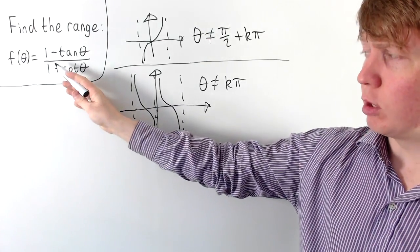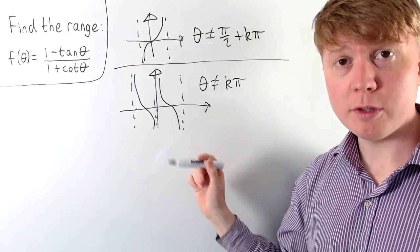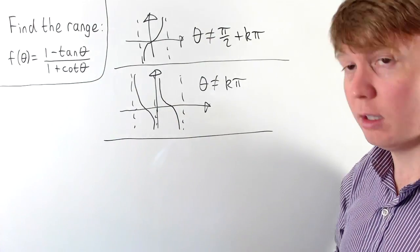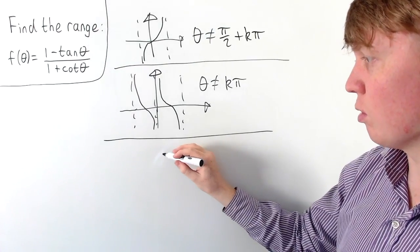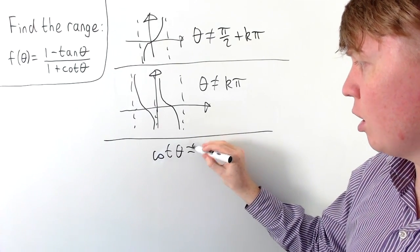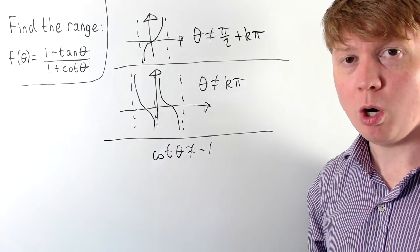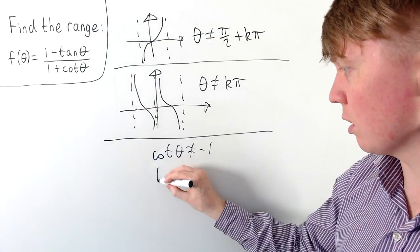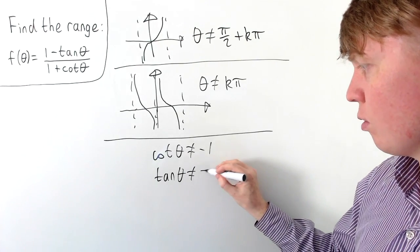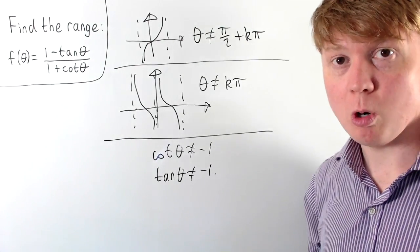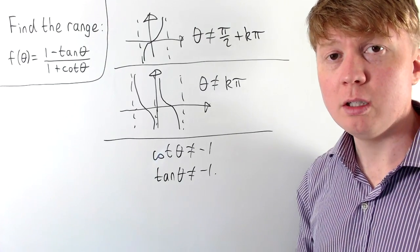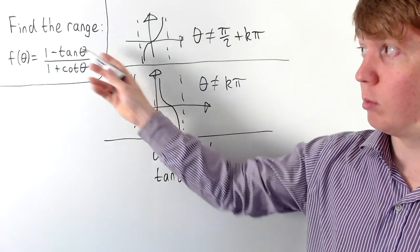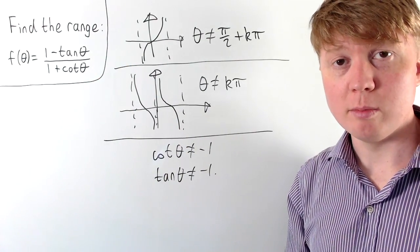The only other problem we could run into with this function is what if the denominator was equal to zero. We would need 1 + cot theta to not be equal to zero, so cot theta can't be equal to -1. Remembering that tan theta is the reciprocal of cot theta, we can express this as saying tan theta also can't be equal to -1, in order for the reciprocal not to equal zero. These are all the values of theta which would cause the function to not be well defined.